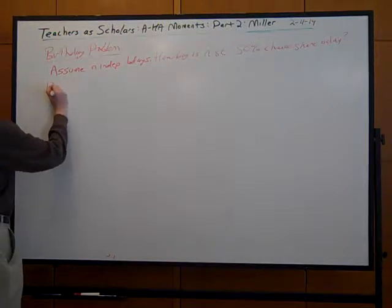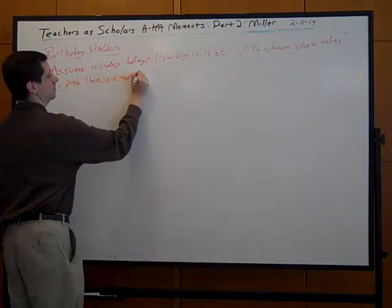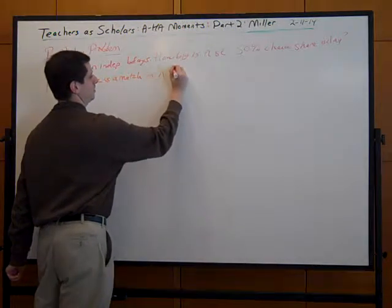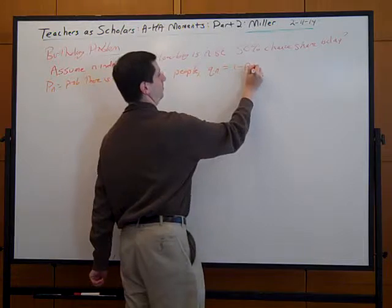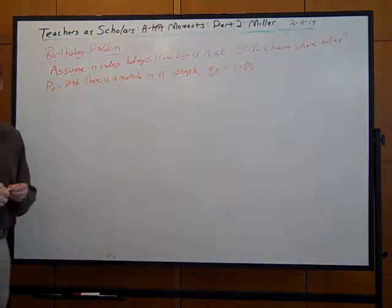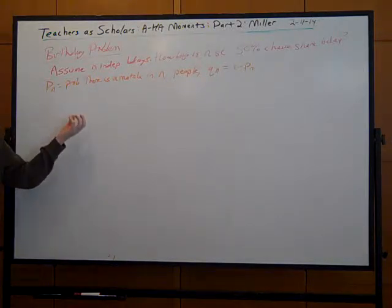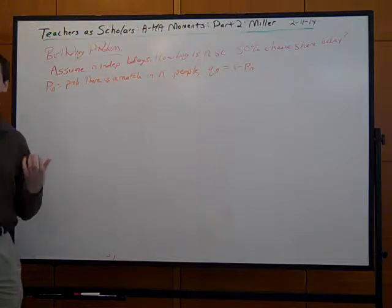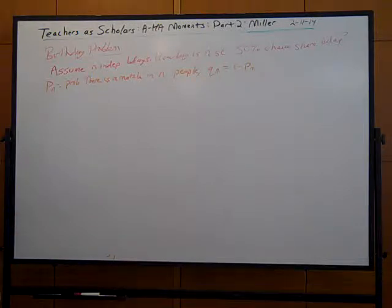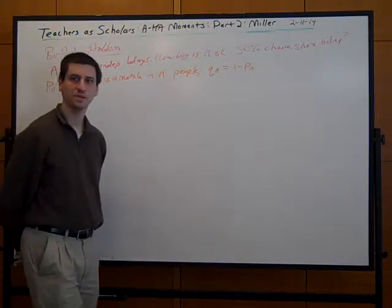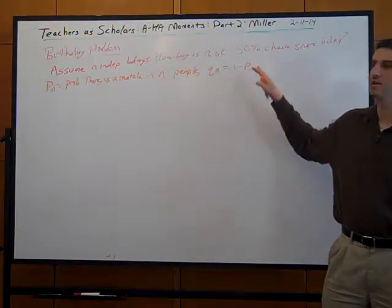Let pn be the probability there is a match among n people, and qn = 1 - pn. Since we care about 50%, either one is fine. Which is the easier event to consider - the probability there is a match, or the probability there isn't?